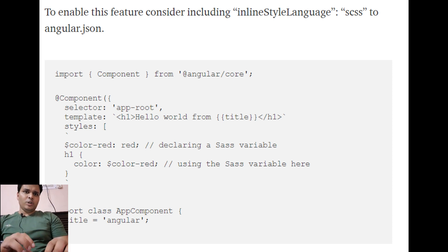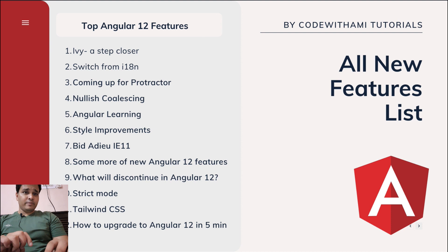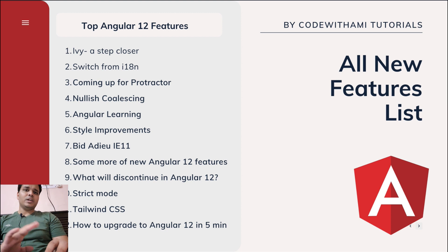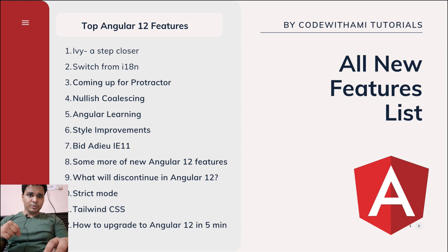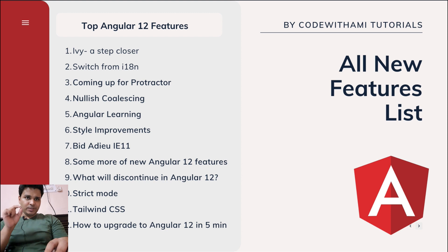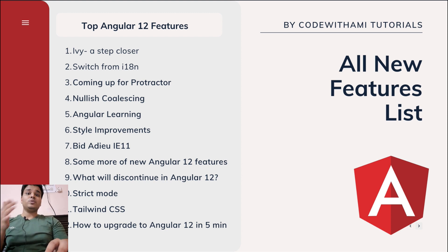Regarding Tailwind CSS, Angular 11.2 had already enabled support for it. Another update is that Angular Material and Angular CDK have adopted the new Sass module system. You'll need to install the Sass npm package and switch from Node Sass. The new Sass API comes with the added `@use` syntax, which is more useful with better naming conventions. When you update your app to Angular 12, you'll automatically be switched to the new Sass API.